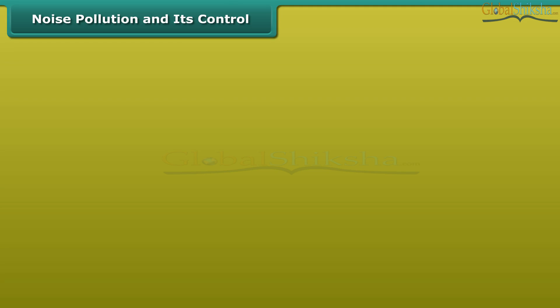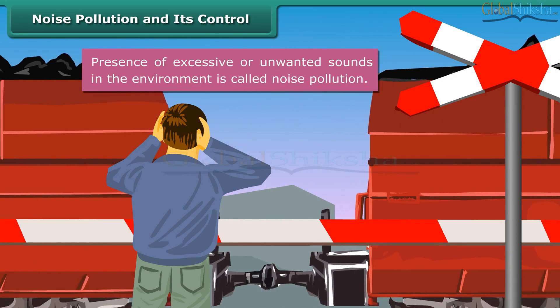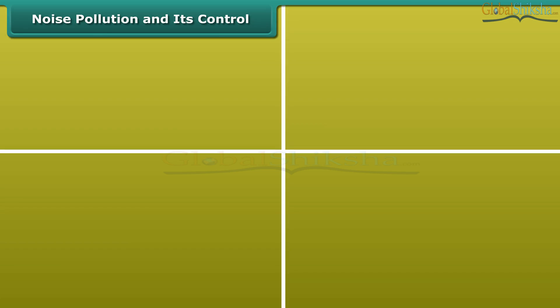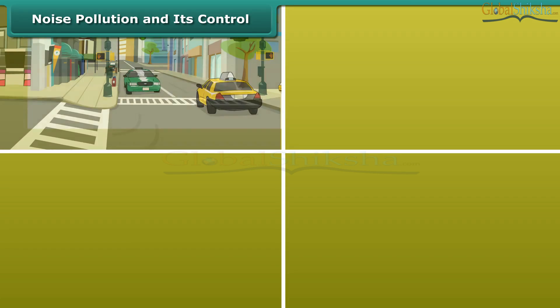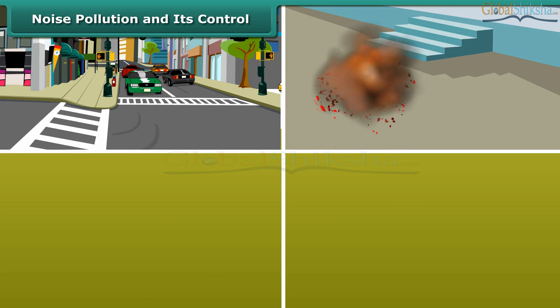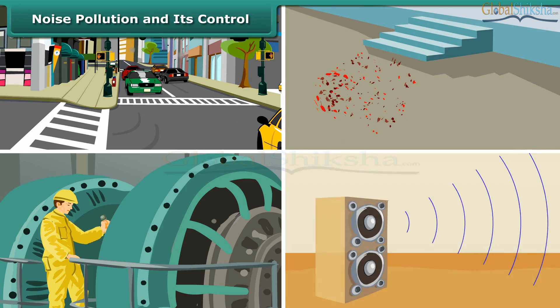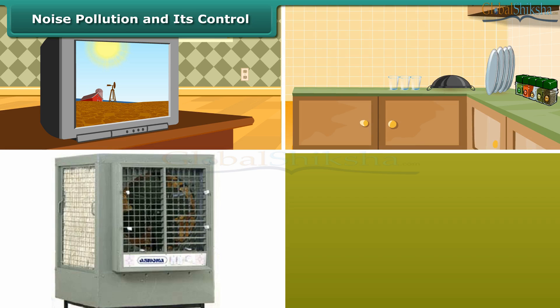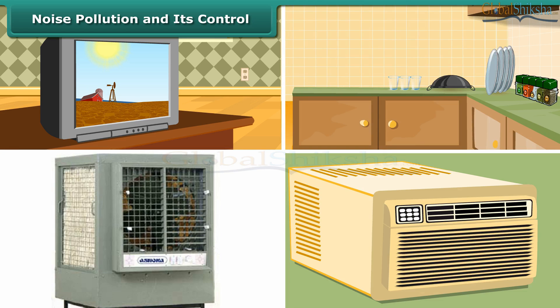Noise pollution and its control. Presence of excessive or unwanted sounds in the environment is called noise pollution. The major cause for noise pollution is sounds of vehicles, explosions including bursting of crackers, machines, loudspeakers, etc. Television and transistor radio at high volumes, some kitchen appliances, desert coolers, air conditioners, all contribute to noise pollution.